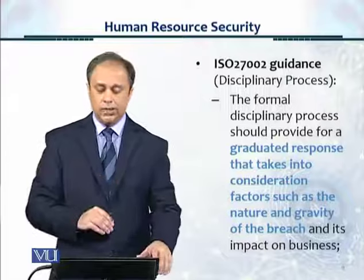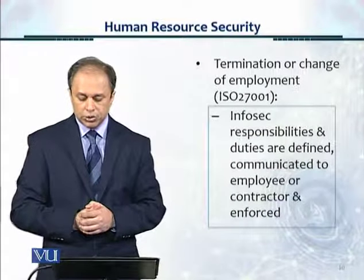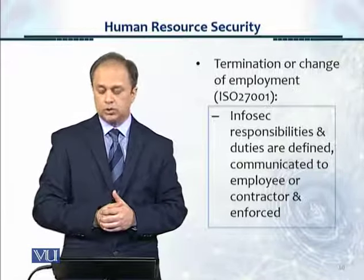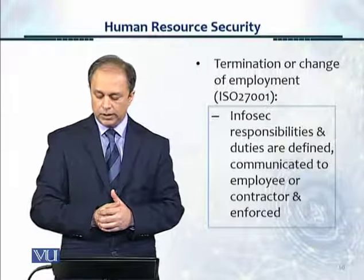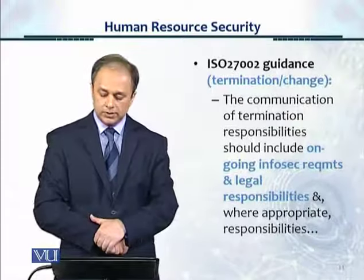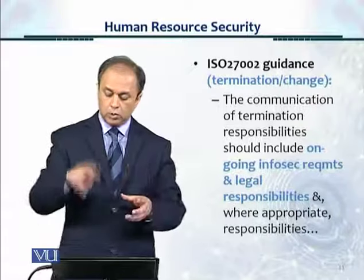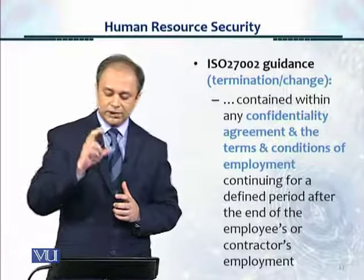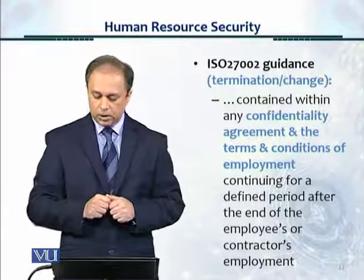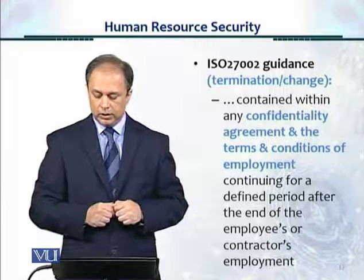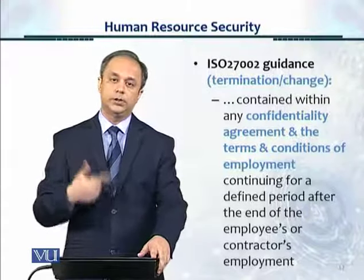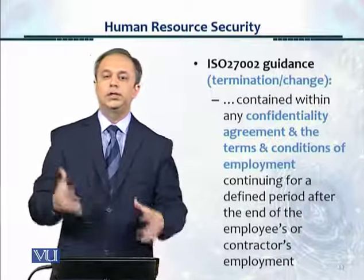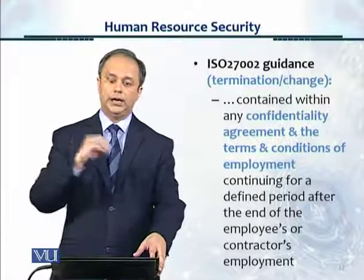Then we look at termination or change of employment under 27001, which is the third control objective. Under this, we have one control: information security responsibilities and duties are defined, communicated to the employee or contractor, and enforced. 27002 tells us the communication of termination responsibilities should include ongoing information security requirements and legal responsibilities, and where appropriate, responsibilities contained within any confidentiality agreement and the terms and conditions of employment continuing for a defined period after the end of the employee or contractor's employment. So, even after employment has been terminated, these conditions and terms need to be understood and implemented by the employee and the organization.